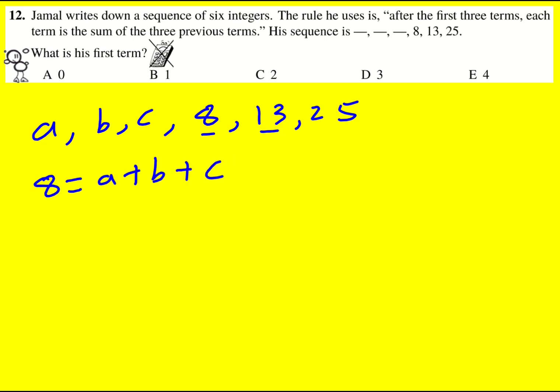To get 13, it's going to be b plus c plus 8. But to get 25, it's going to be c plus 8 plus 13. And that is actually the key one.